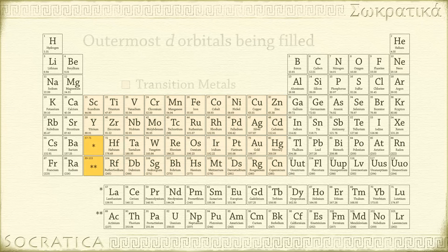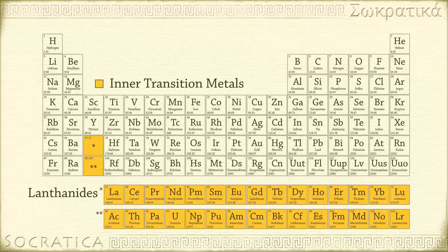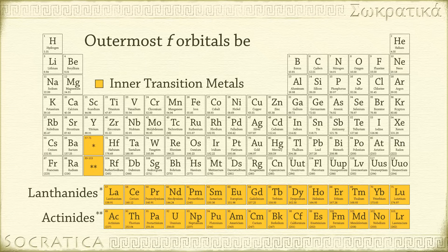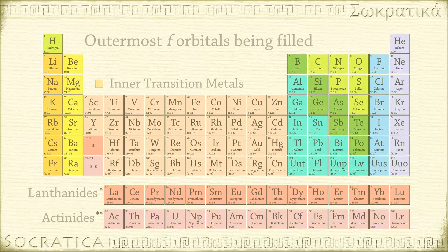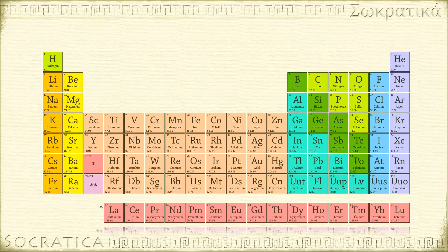The asterisks take you to the bottom of the periodic table, where there are two rows of fourteen columns. These are the inner transition metals, also known as the lanthanides and actinides. These elements have the outermost f orbitals being filled.